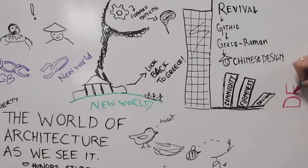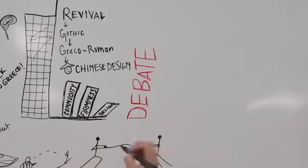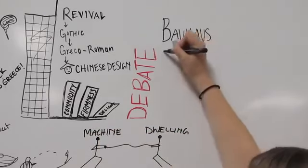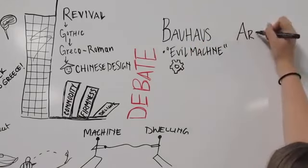There is a huge debate among architects as to which style has the most dominant voice in the Western world. It's a tug-of-war between a house being a machine and a house being a spiritual dwelling. Bauhaus versus Art Nouveau, the evil machine versus arts and crafts.